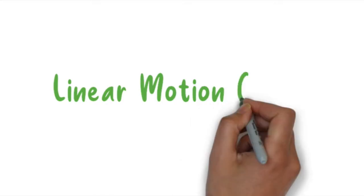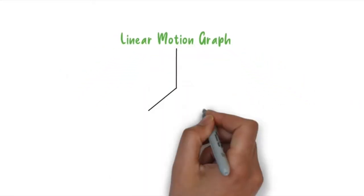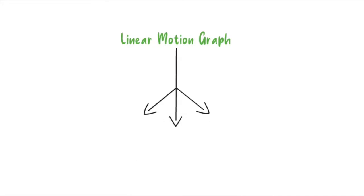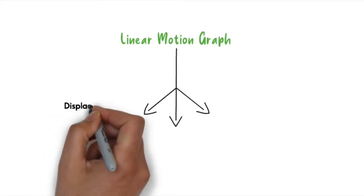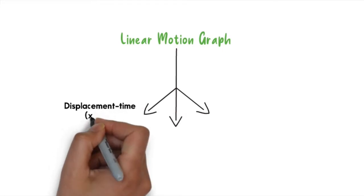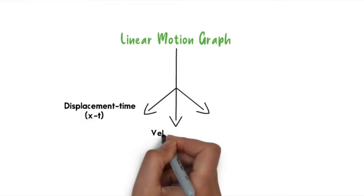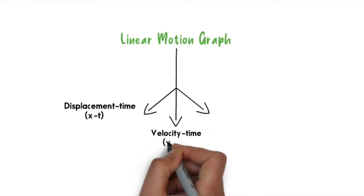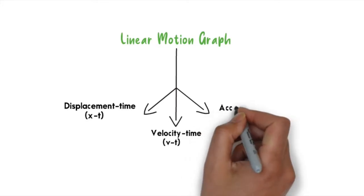There are three types of linear motion graphs: the first one is the displacement-time graph, the second one is the velocity-time graph, and the last one is the acceleration-time graph.